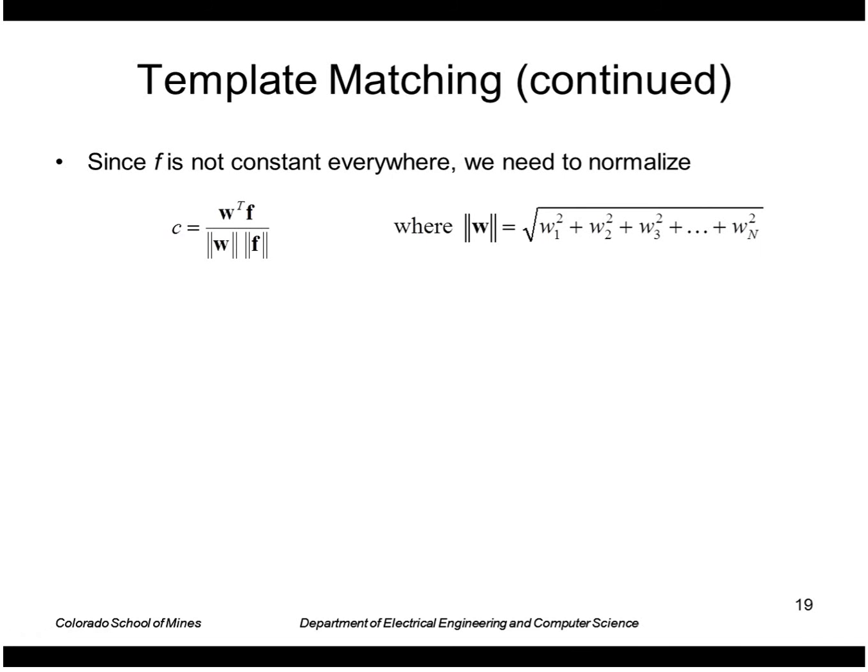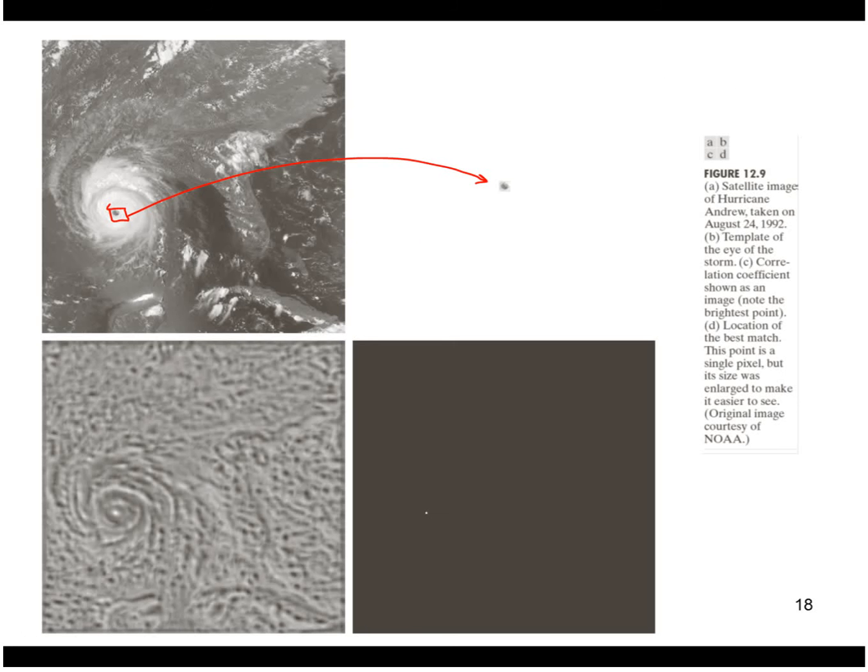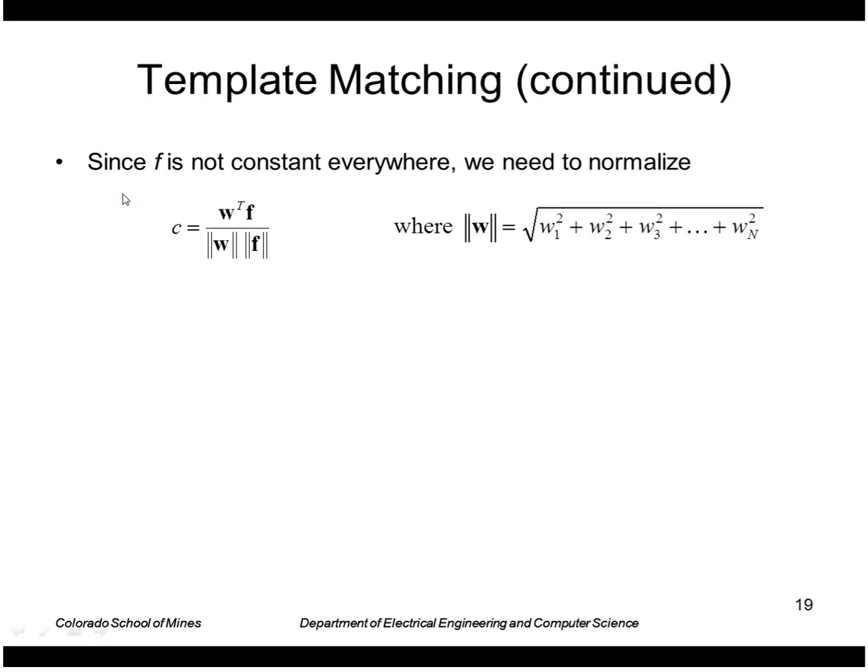One problem with this naive method is that the scores would be high regardless where the original image had high values. To eliminate that effect we'll normalize by dividing by the magnitude of w and the magnitude of f.